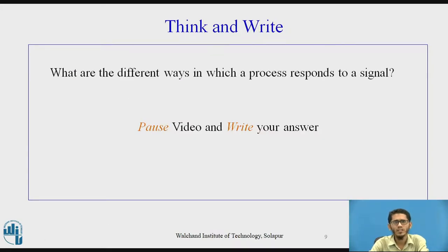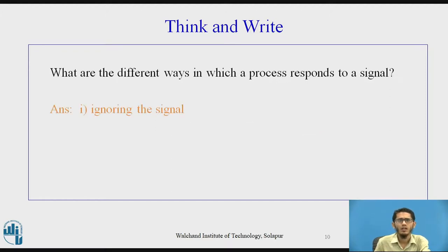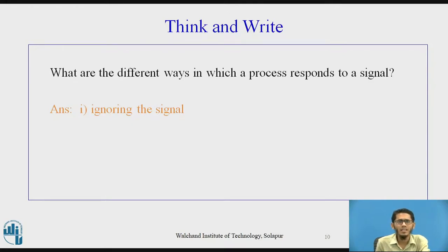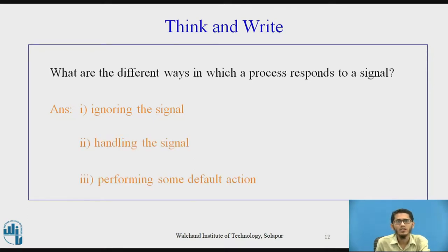Students are expected to think and write the answer to the following question: What are the different ways in which a process responds to a signal? The three ways a process may respond to a signal are: it either ignores the signal, handles the signal, or performs some default action.